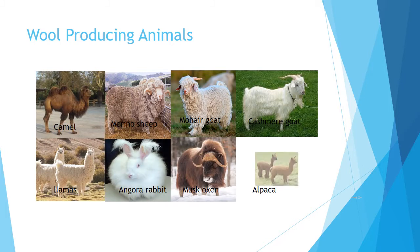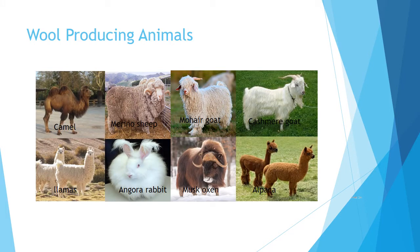Wool-producing animals include: Camel, Merino sheep, Mohair goat, Kashmir goat, Llama, Angora rabbit, Musk oxen, and Alpaca.